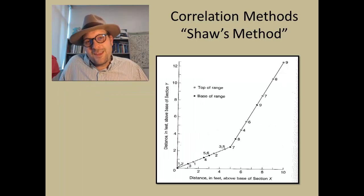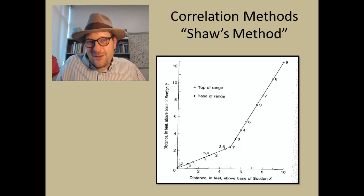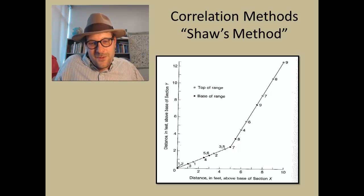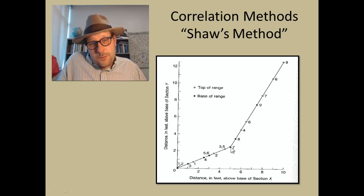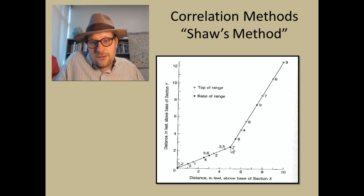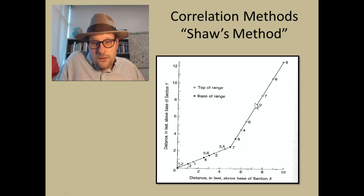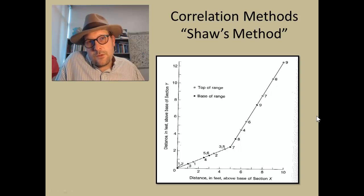Sometimes you will get a kinked or bent line on the graph. This occurs when sedimentary rates change — the amount of sediment building up changes through time. For example, you might have a very slow sedimentary rate for the lower portion of the section, and then at some point — due to a change in depositional environment, climate, or regional tectonics — sedimentation really takes off, producing a line that changes direction. That means the sedimentary rates changed.